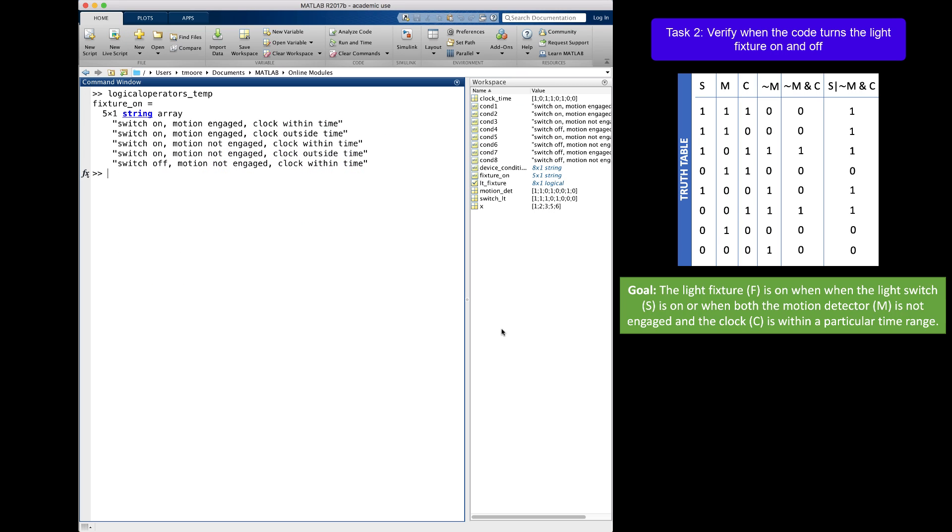Thinking back to the goal of the problem, I see that the first four outputs all have the switch on, which forces the light on. So this fits the goal. The only additional output has the switch off, the motion detector not engaged, and the clock within the time set by the owner. So you can see this also fits the goal. Therefore, we know our code runs successfully.